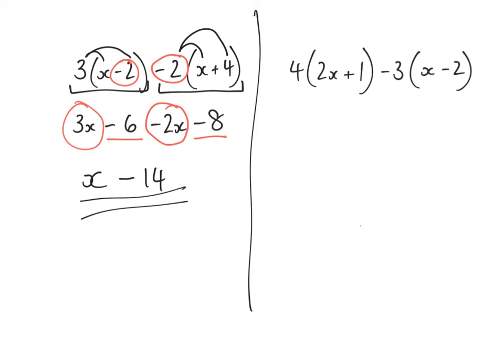Okay, so we have got 8x plus 4. It is a negative 3 here. Must remember and look at that sign. Negative 3 multiplied by x is negative 3x. Negative 3 multiplied by negative 2 is positive 6. Be really careful with those negative numbers.